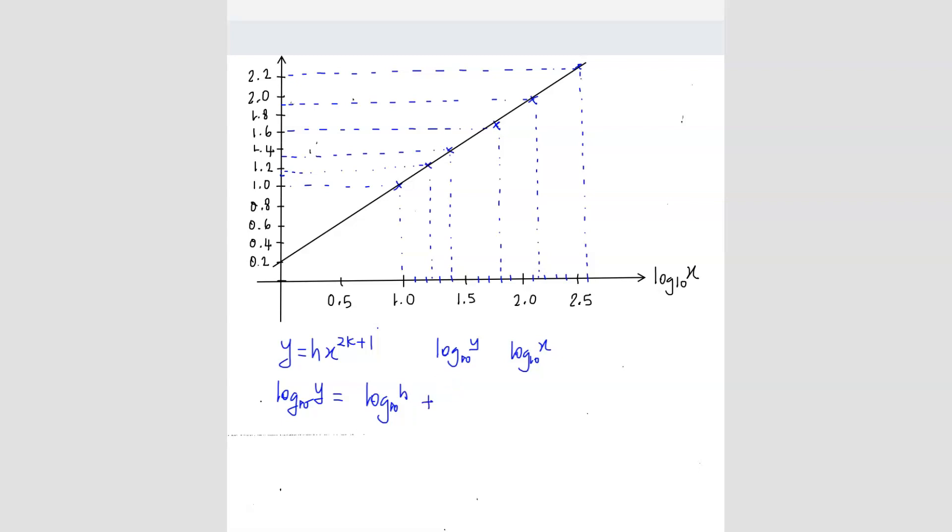So this one here you can actually break them apart because h and x are multiplying each other. So you can get log h base 10 plus log x base 10 and then here is 2k plus 1. So this 2k plus 1 you can bring it in front. So we can rewrite that. 2k plus 1 log x base 10.